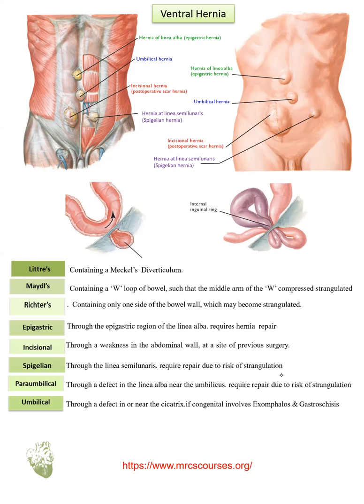Don't forget many other types, like Amyand's hernia when containing the appendix. Any visceral content can be inside hernia contents, such as the urinary bladder, urethra, ureter, colon, and sometimes even the ovaries.